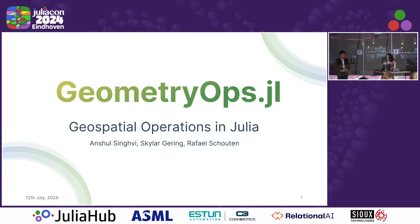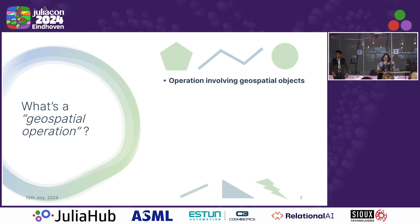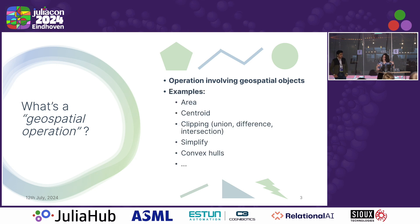Your first question might be: what are geospatial operations, especially if you're not super in the geometry ecosystem yet? These are operations involving geospatial objects — basically things like polygons, lines, and points. The operations can mean a lot of things: taking in geospatial objects and outputting values like area or centroid, taking multiple objects and outputting a new one like union, difference, or intersection, or changing a single object such as simplifying it or finding its convex hull.